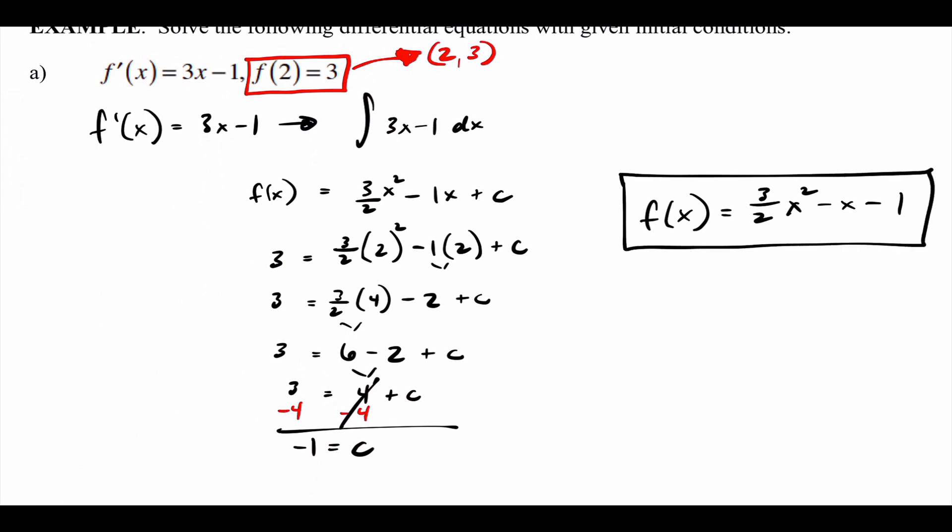So f(x) not only passes through the point (2, 3) — when you plug in 2 for x you get 3 — but when you find its derivative, you get 3x minus 1. It works.